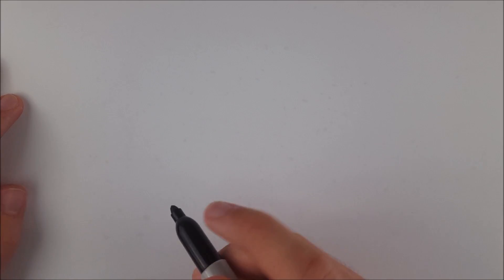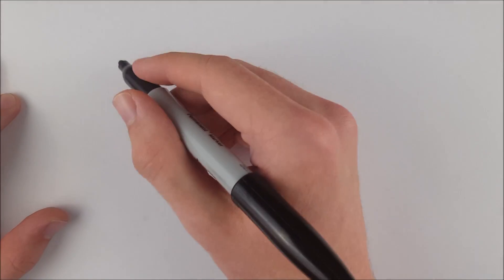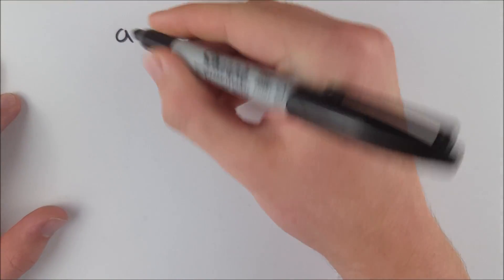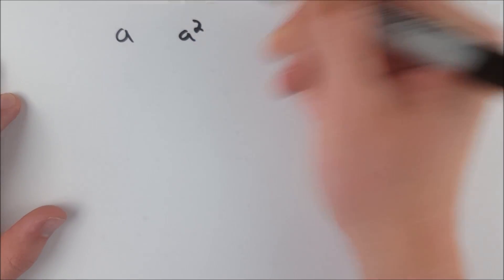In today's video we are doing a quick proof showing that an even number squared has to be an even number. So let's suppose we have some even number a. We want to show that a squared is even.